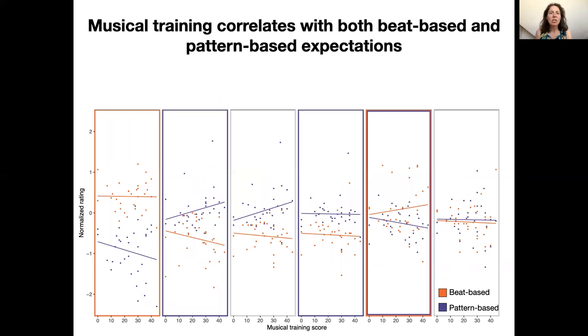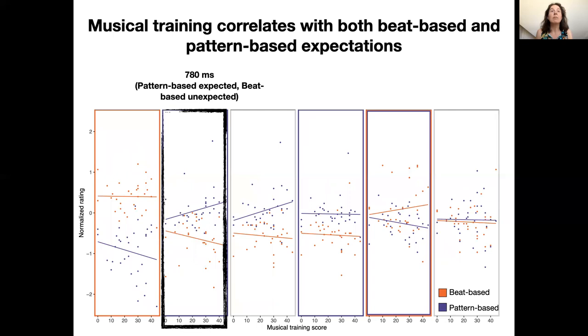We also found that the ratings correlated in a systematic way with the musical background of the participants. Here you see the correlation between the normalized ratings, again on the y-axis, and the musical training of participants on the x-axis. To illustrate the relationship, consider responses for probes at 780 milliseconds after the end of the rhythm. This position was expected based on the pattern, but not on the beat. Here, more musical training was associated with higher ratings in the pattern-based condition. At the same time, more musical training was associated with lower ratings in the beat-based condition. Thus, for both types of expectations, participants with more musical training were better able to use the structure of the rhythm to guide their ratings.